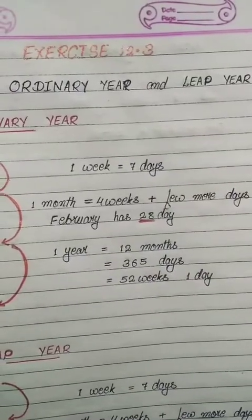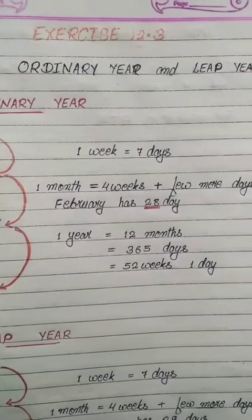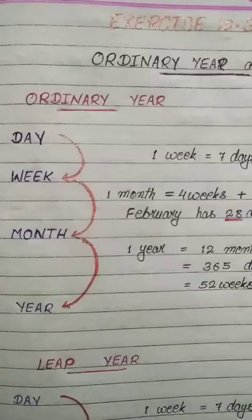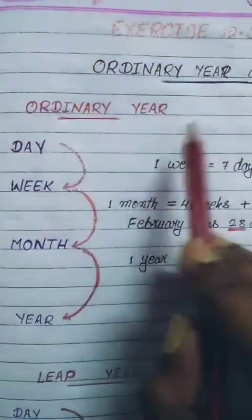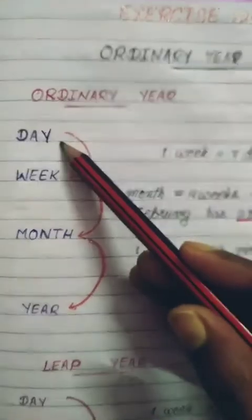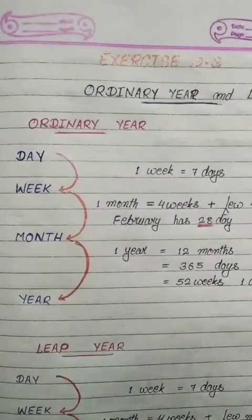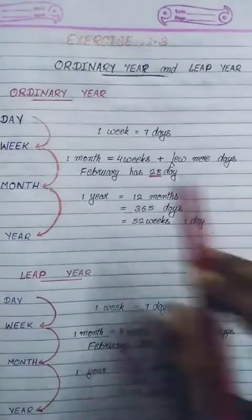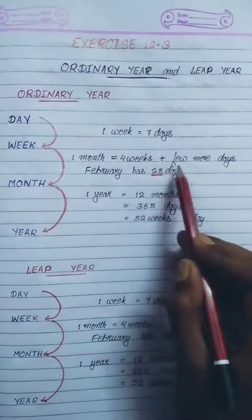Now exercise 12.3. In this exercise we are going to learn about the calendar — ordinary year and leap year. In a calendar there are days, weeks, months and years. One week equals seven days. One month equals four weeks plus a few more days.